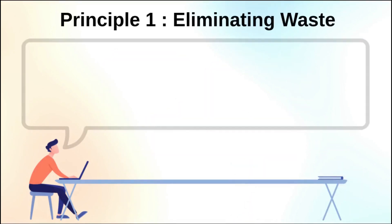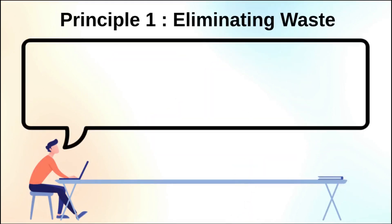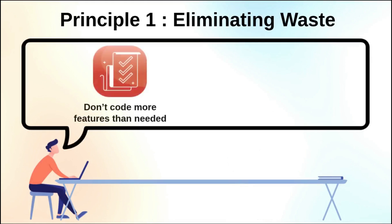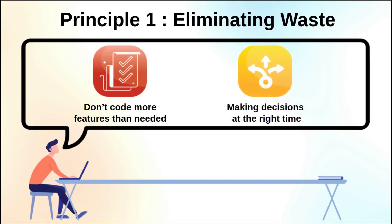One of these principles is eliminating waste, which is making sure that you're not coding more features than needed. You're minimizing handoffs and really not producing anything that is of low or no value. This also means making sure that you're making decisions at the right time. Sometimes organizations will delay decisions waiting on additional information and worrying about being wrong. That's why it's more important to make progress and start learning versus trying to be precise.